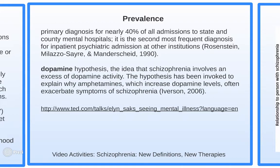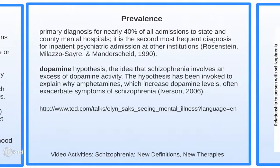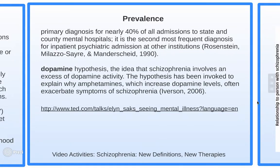Forty percent of all admissions to state and mental hospitals are because of schizophrenia — the second most frequent diagnosis. The dopamine hypothesis is the idea that schizophrenia involves an excess of dopamine activity. This explains why amphetamines, which increase dopamine levels, help exacerbate symptoms of schizophrenia.